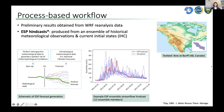The ESP hindcasts are produced from an ensemble of historical meteorological observations, where each year in the past represents a possible condition for the future, so each year is an ensemble member. You start your forecast from initial states saved in the past — one set of initial conditions. An example of an ESP hindcast for the Bow Bend shows 12 ensemble members.